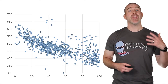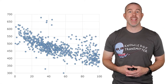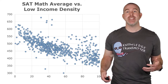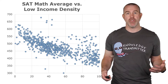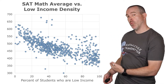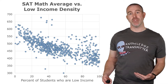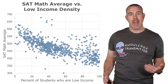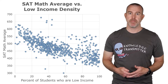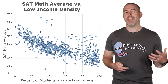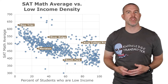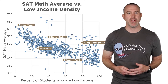For this video, we're going to continue the example where we were analyzing education data. We had this scatter plot — SAT math average versus the low income density. The x-axis was the percent of students that were low income in that school, and the y-axis was the average SAT math score at that school. We look at five specific schools listed out on the graph.